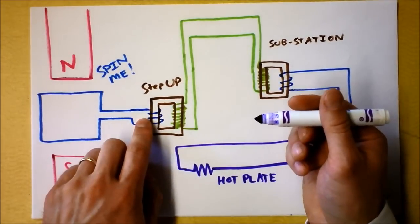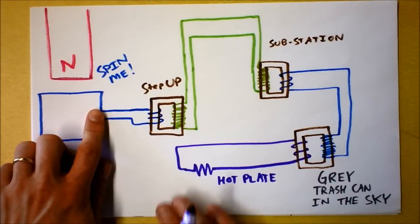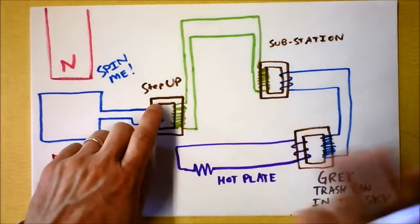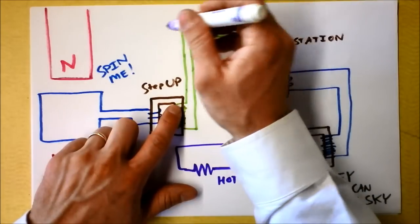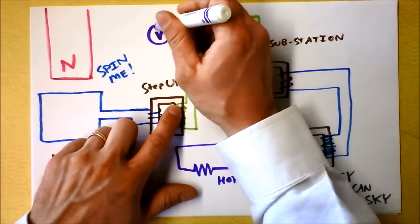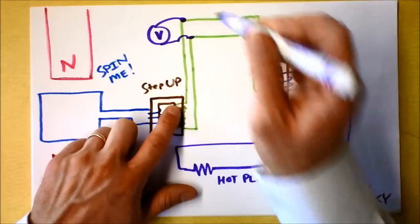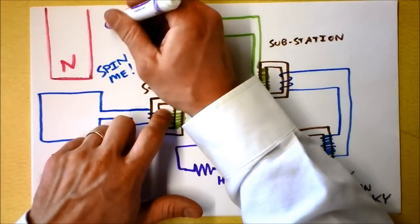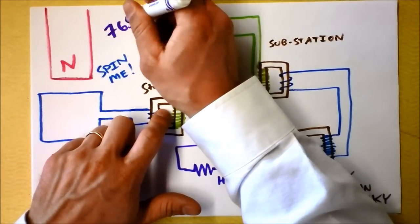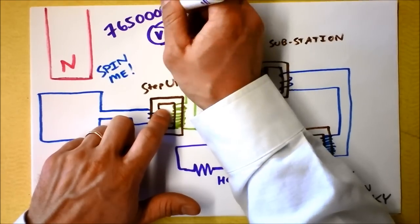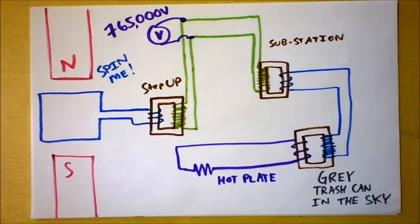Then you've got this step-up transformer. I don't know what the voltage is right here, but I don't care. They're getting to a voltage - let's go crazy and call it 765,000 volts. This would be the largest cross-country transmission line voltage.